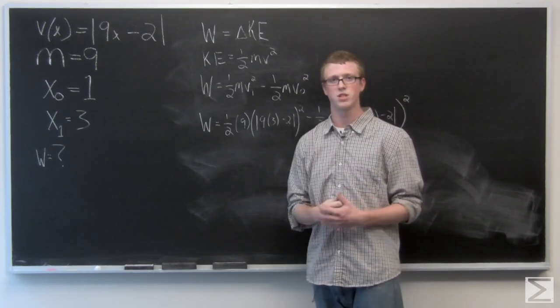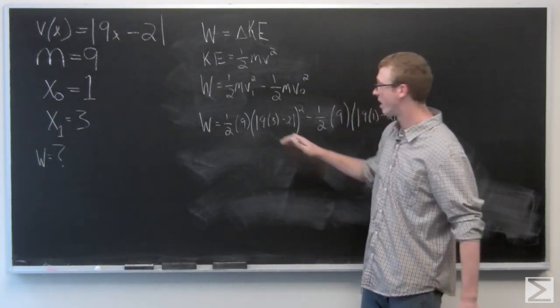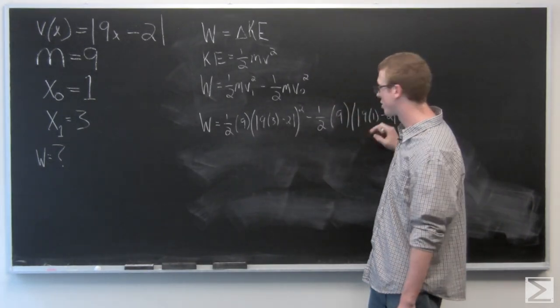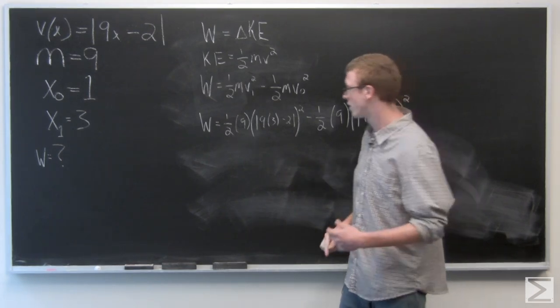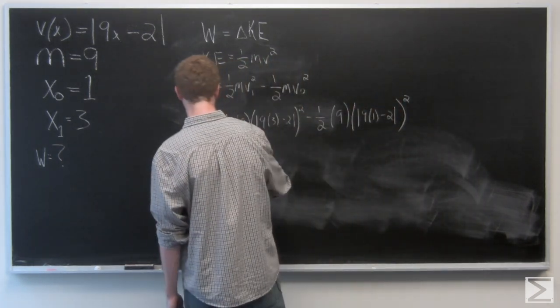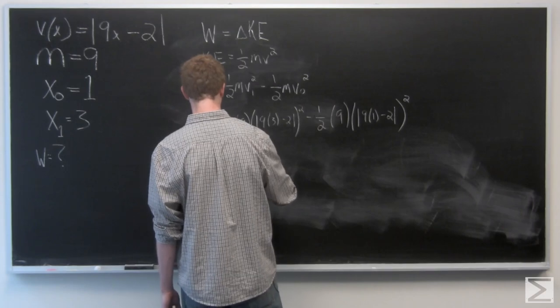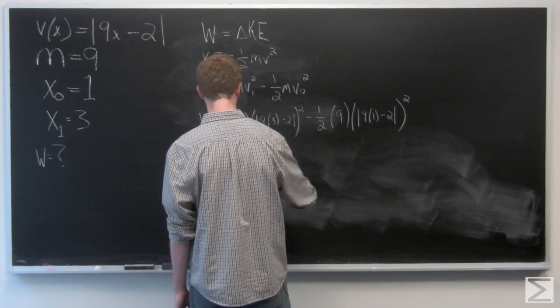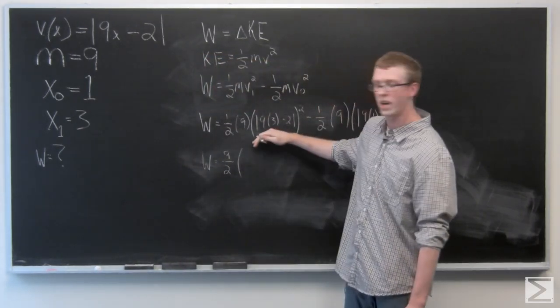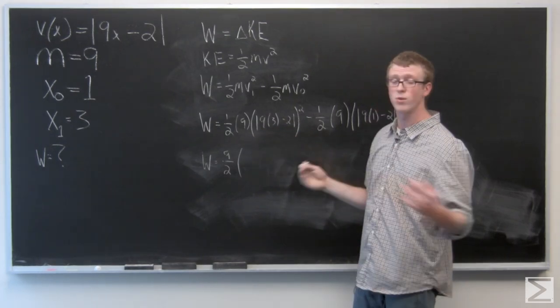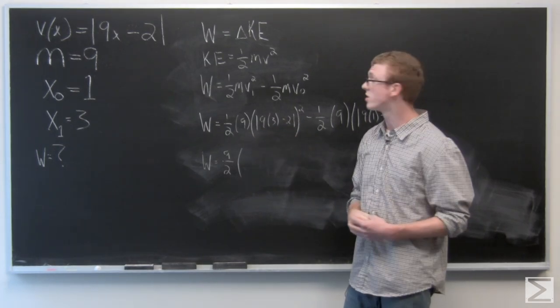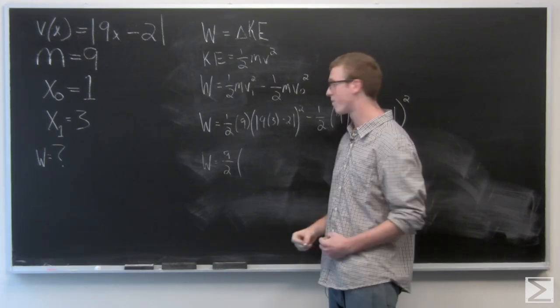Now this problem is just a matter of simplification. We need to do a little multiplication, a little bit of squaring, and some subtraction to finish out the problem. 9 times 3 minus 2 is 25. We can just ignore the absolute value symbols since we have a positive value here.